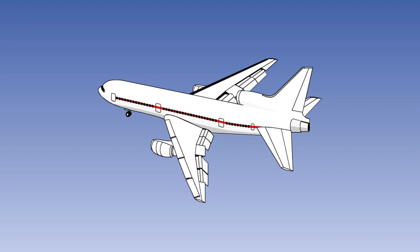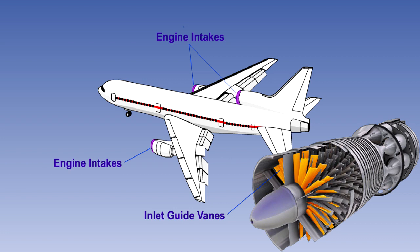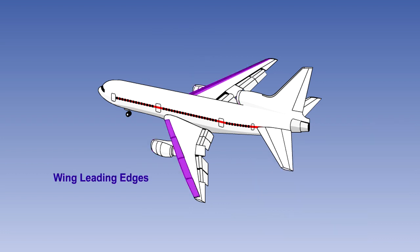The areas normally protected by a thermal system include the engine air intakes and compressor inlet guide vanes, plus the wing leading edges and slats if they are fitted. On some, but not all aircraft types, the tail plane and fin leading edges are also protected.